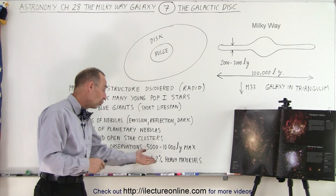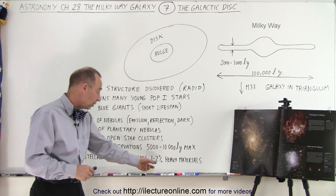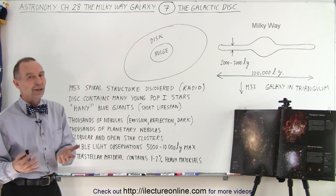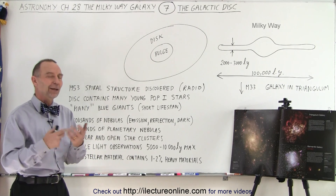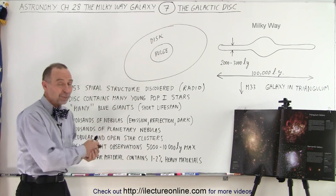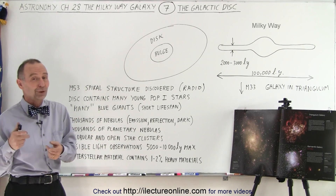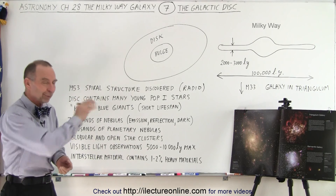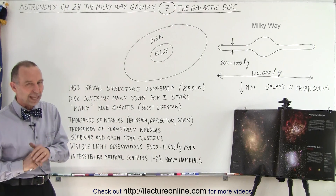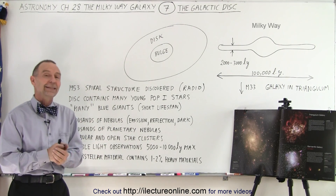About 1 to 2% of the interstellar material is heavy elements, so any new population 1 stars being formed will contain a lot of heavy materials. Those are potentially places where terrestrial planets can be formed, because you need heavy materials to form planets like Earth. That's why newer stars are the places you want to look for Earth-like planets, not old population 2 stars. Population 2 stars probably don't contain any terrestrial planets — probably just gas planets. That's the key difference between the bulge and the galactic disk.